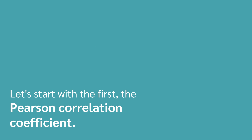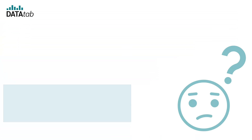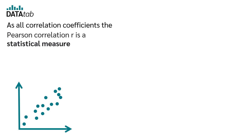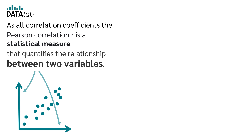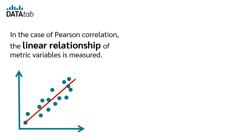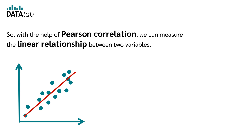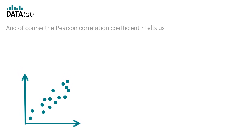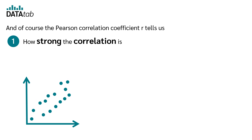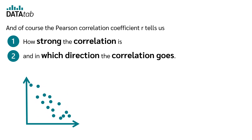Let's start with the first: the Pearson correlation coefficient. The Pearson correlation r is a statistical measure that quantifies the relationship between two variables. In the case of Pearson correlation, the linear relationship of metric variables is measured. The Pearson correlation coefficient r tells us how strong the correlation is and in which direction the correlation goes.